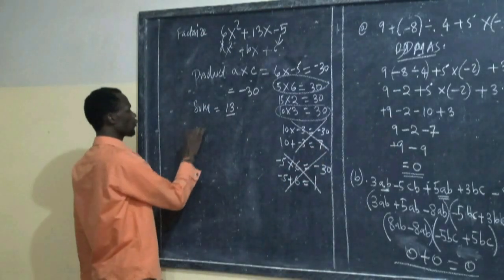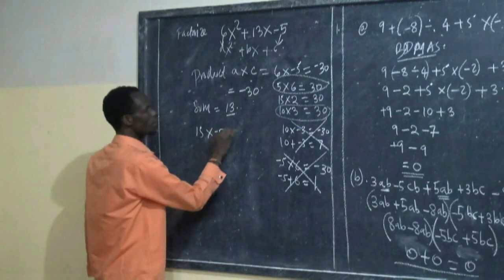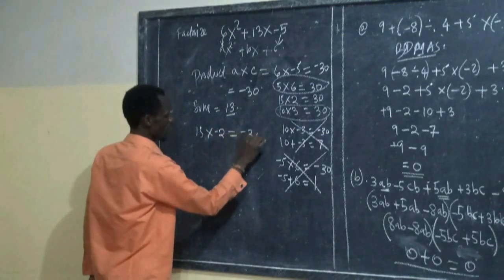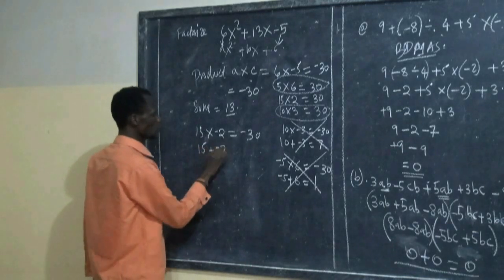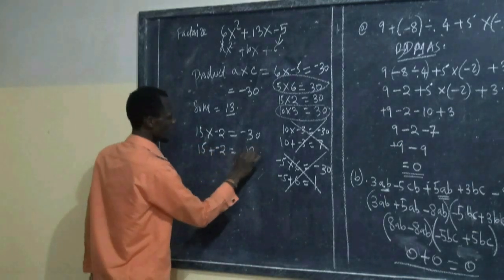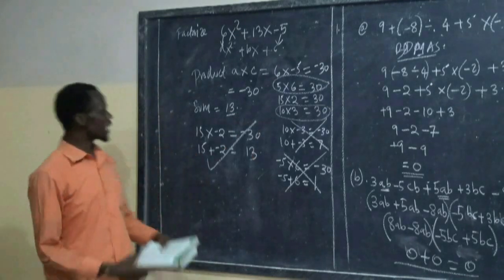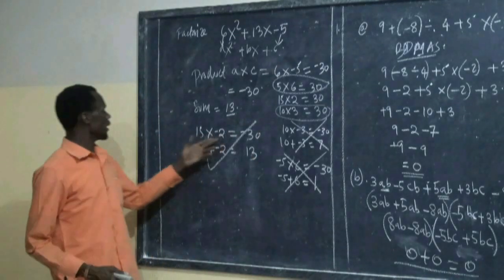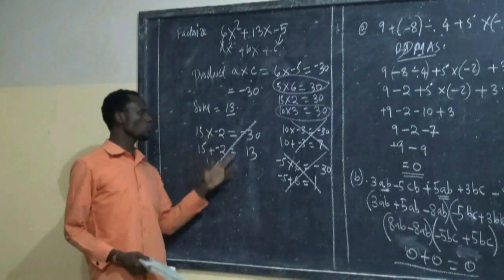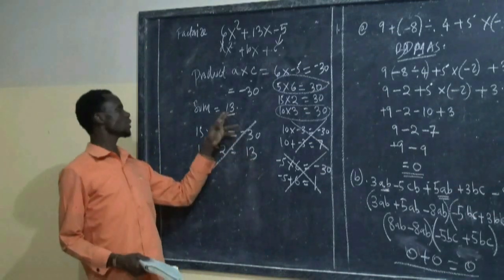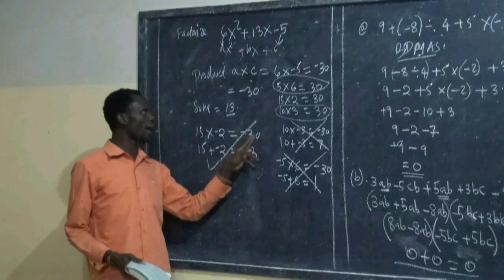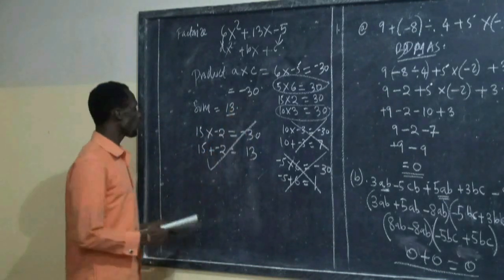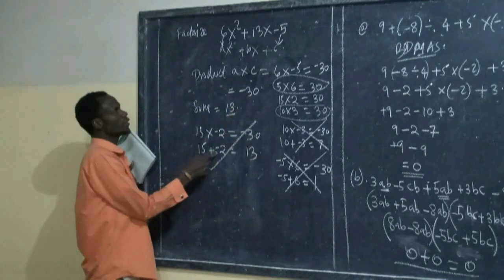You count 15 times negative 2, it is equal to negative 30. Then 15 plus negative 2. This is okay. So we say this is okay because the sum is equal to 13 as it is here, and the product is equal to negative 30 as it is here.